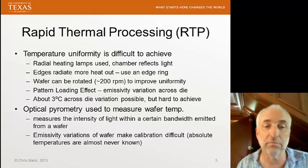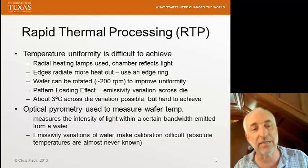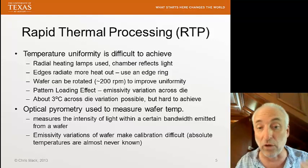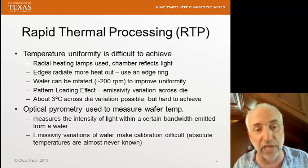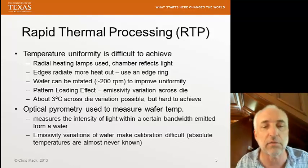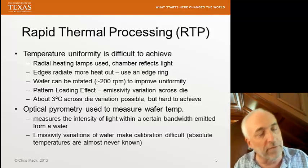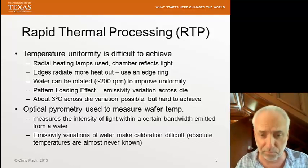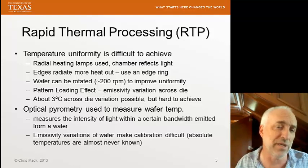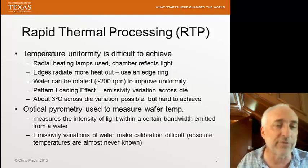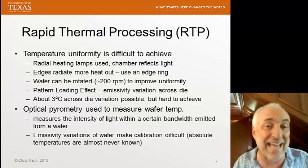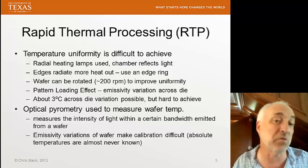This is still a difficult problem. The emissivity — the way in which the wafer radiates out — is a function of the materials on the wafer, and those materials vary because some parts have metal, some have oxide, etc. We get variations in emissivity across the wafer, making calibration difficult. As a result, absolute temperatures are almost never known. We do relative measures, so if every wafer is consistent, we at least know we're at the point we want to be at.